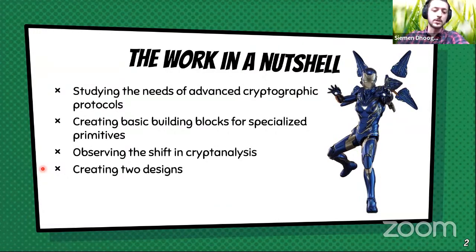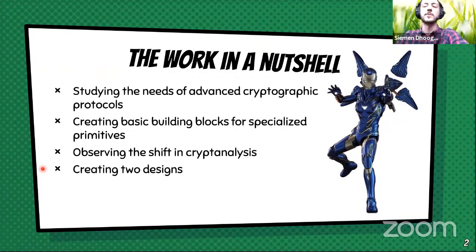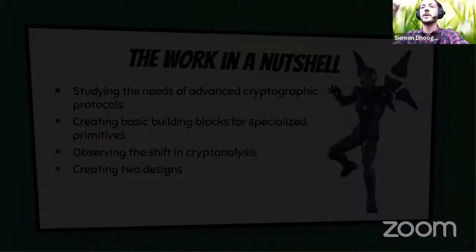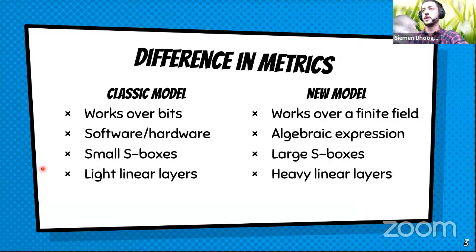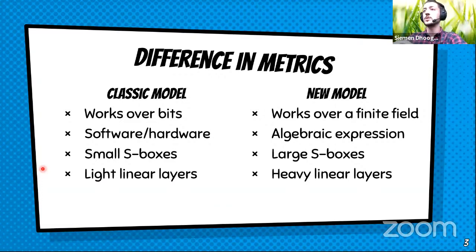We find that their basic building blocks that they find efficient are not the ones we typically find efficient for software and hardware, so our primitives will look a little bit different. In the classic model, our primitives typically work over four bits because that's simply our architecture, and most of the time we use small four or five bit S-boxes. Our linear layers are quite light — we want to reduce XOR counts, since over hardware XORs are quite costly in transistor counts.